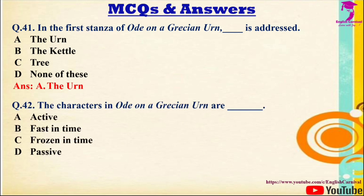Question 42: The characters in Ode on a Grecian Urn are — Options: A) Active, B) Fast in time, C) Frozen in time, D) Passive. Correct answer is C — frozen in time.